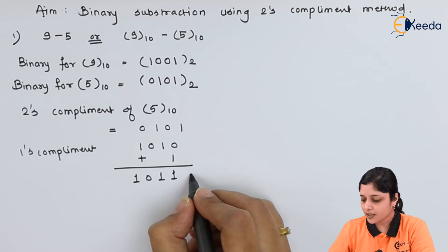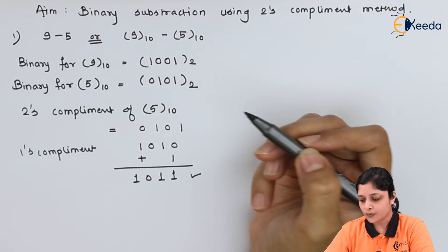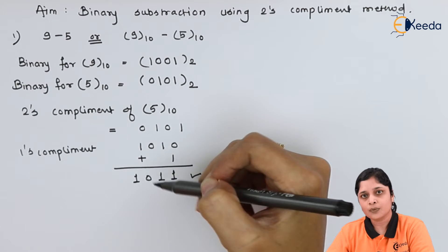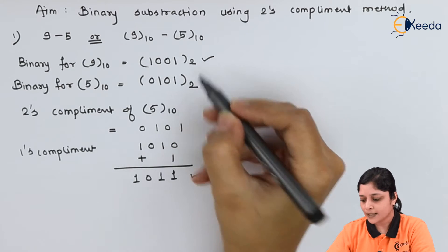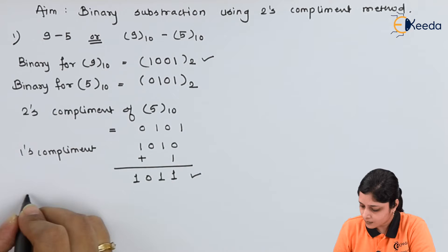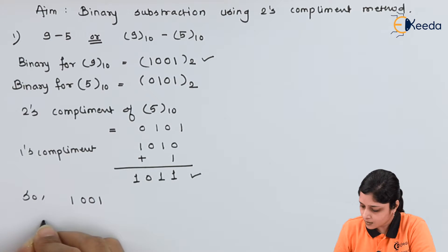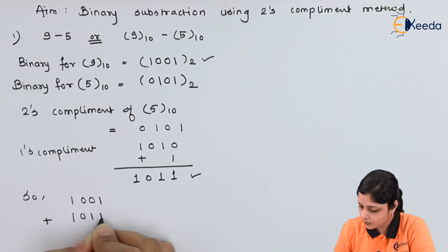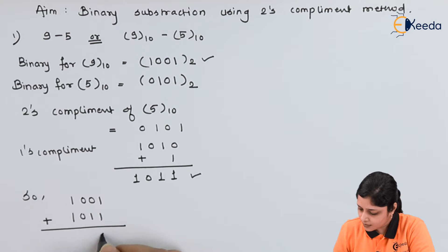After getting the 2's complement value for 5, which is 1101, you have to add this value to the binary for 9. So you perform binary addition: 1001 plus 1101. Adding the bits gives a result with a carry.